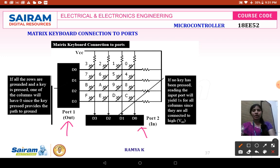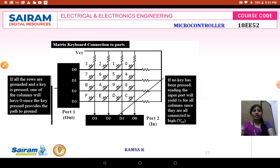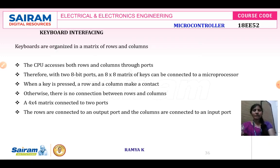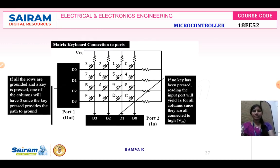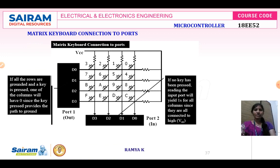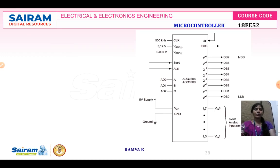The two ports are configured such that port 1 is connected to the row — that is, the output port is connected to port 1. The output port is connected to rows and the input port is connected to columns. If no key is pressed it gives an output voltage of 0; if any key is pressed it gives a logic level 1 at its output.